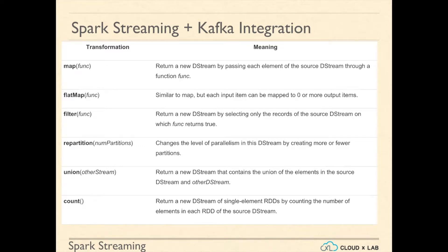Spark Streaming provides functions like map, flat map, filter, and count exactly the way RDD provides. Spark Streaming creates temporary RDDs from the streams of data and runs these functions on top of these RDDs. We have already discussed these functions earlier.